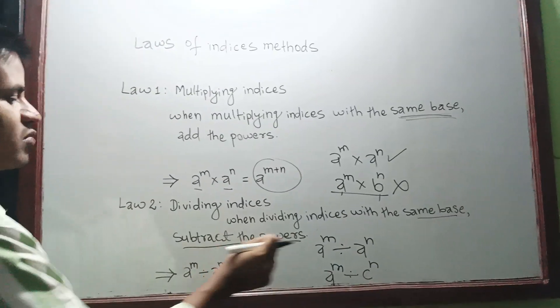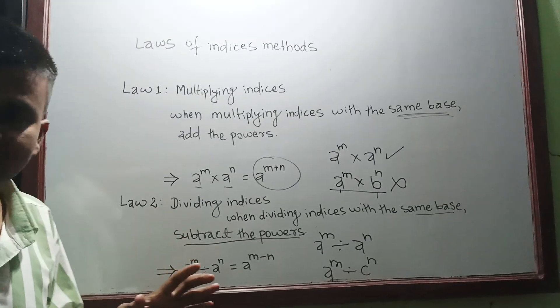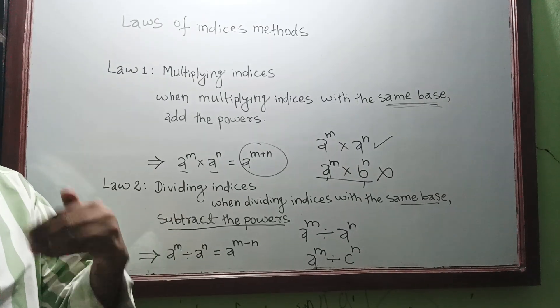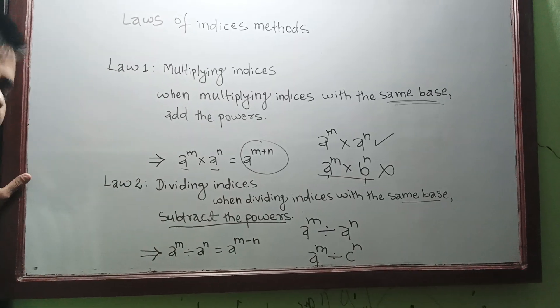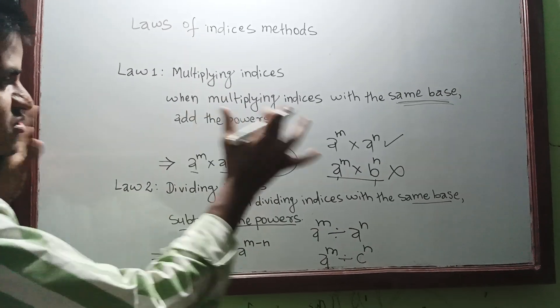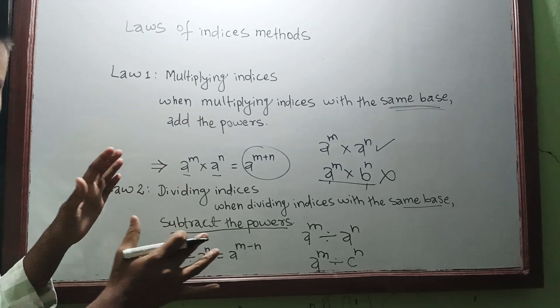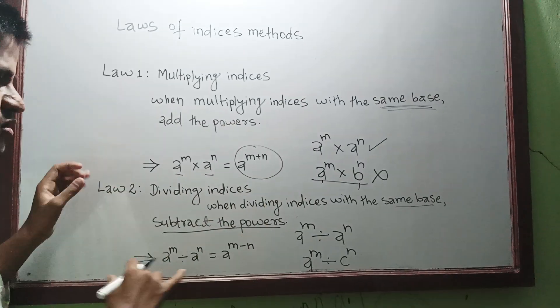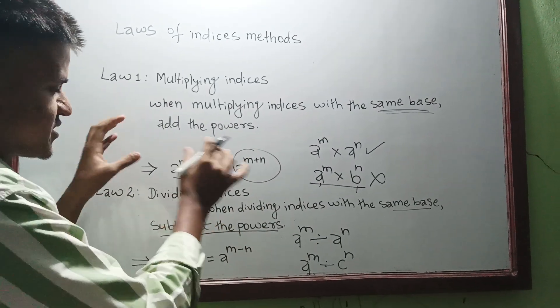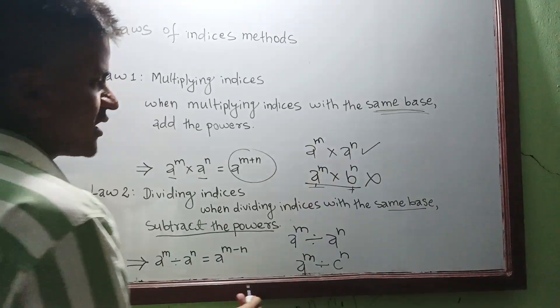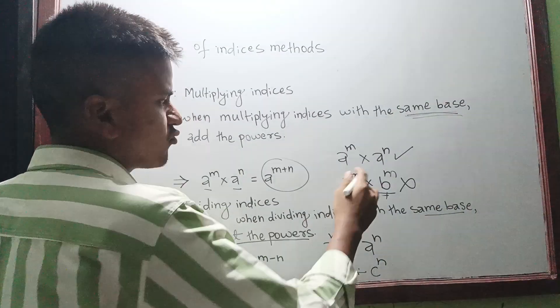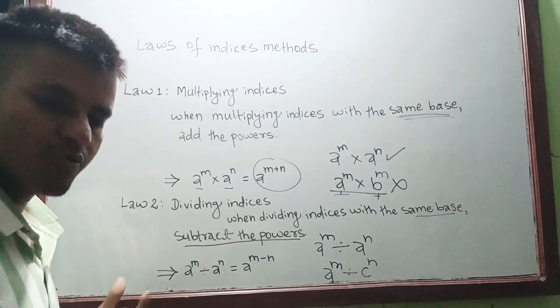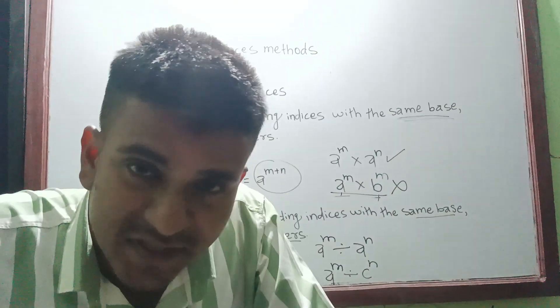There are seven laws of the indices method. We will see them step by step, and that is the way we have to do. Don't get confused because most of the basic confusion happens here only, because of the base part. Sometimes people get confused. We will see those things in the next video. Thank you so much.